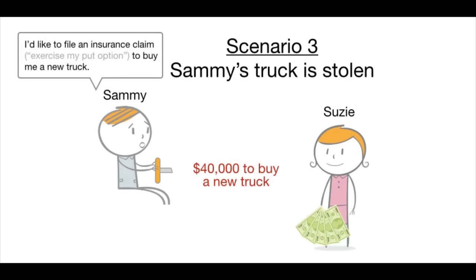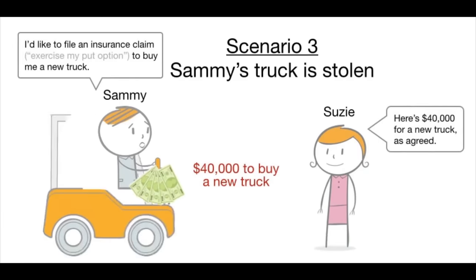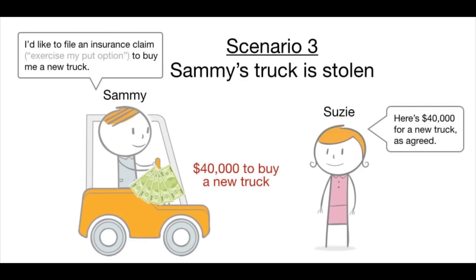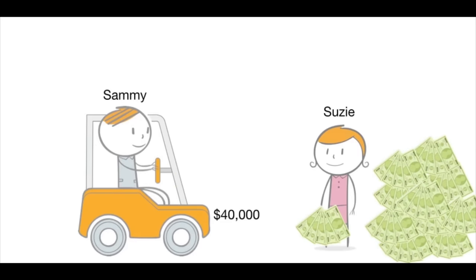In the third scenario, Sammy's truck is stolen. He exercises his put option and files a claim for the full replacement value, and Susie pays him the full $40,000 to buy a new truck. Sammy is very happy he purchased protection for this possibility. In any case, Susie is happy because she sold many such insurance policies — different put options — to other drivers, most of which never filed a claim, providing her with a net profit overall.